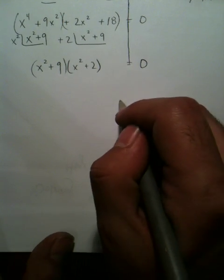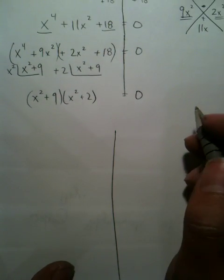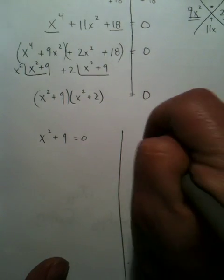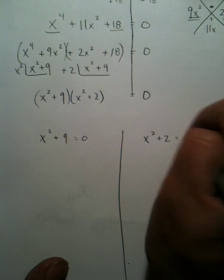From this point, as I've said before, you're going to break your answers into two parts. One where the x² plus 9 equals 0, and one where the x² plus 2 equals 0.